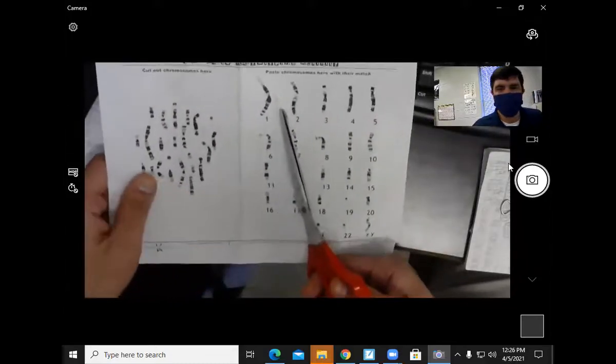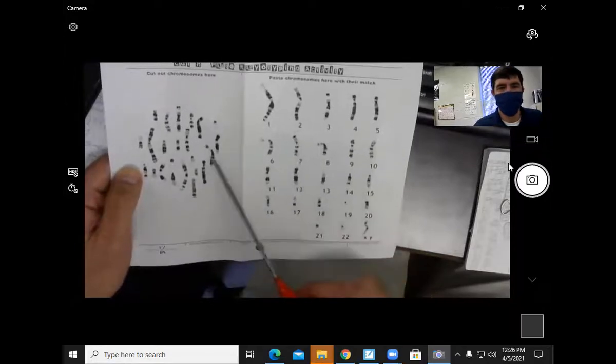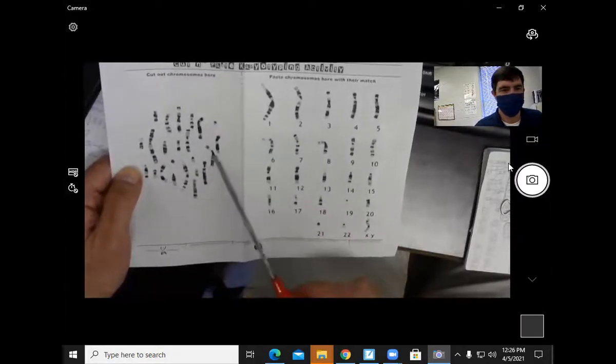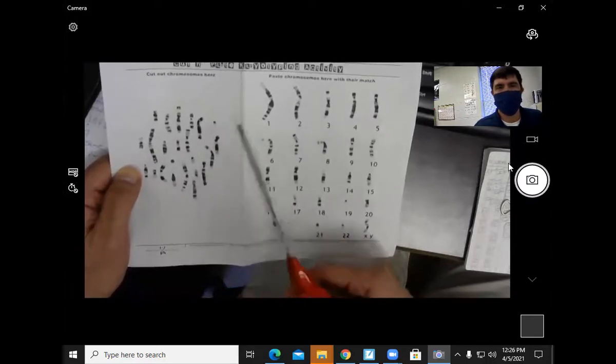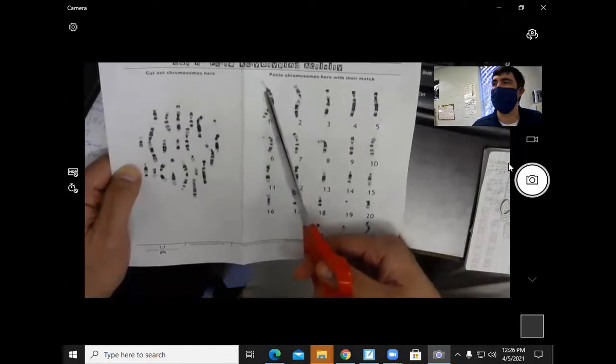Chromosome 1. Which one is chromosome 1 over here? Right here? It's going to have the same banding pattern.